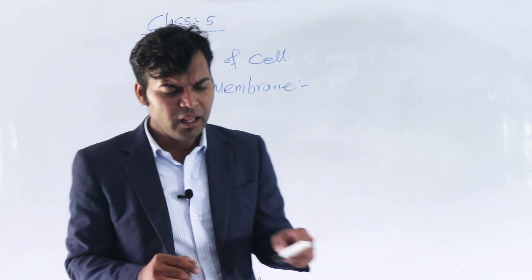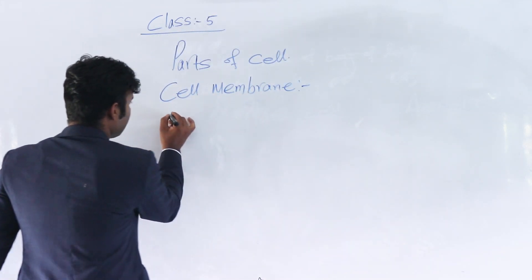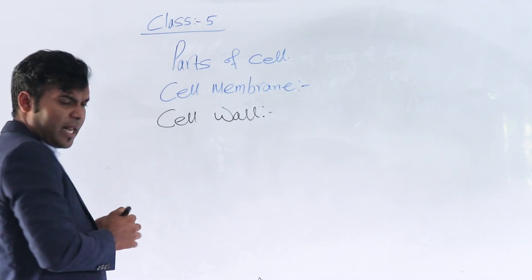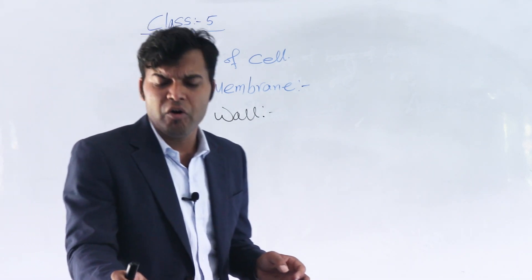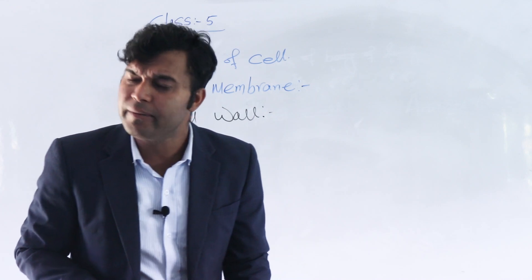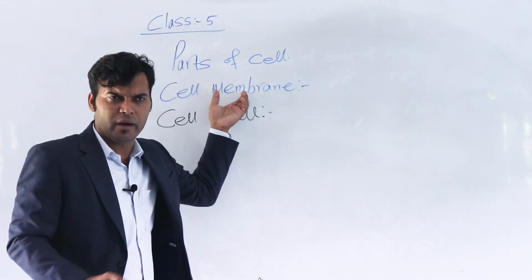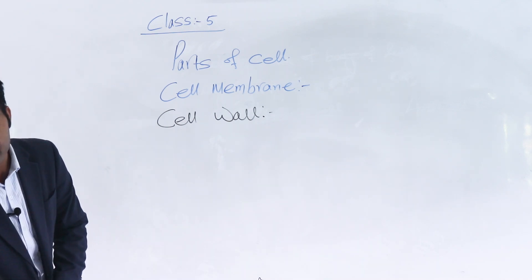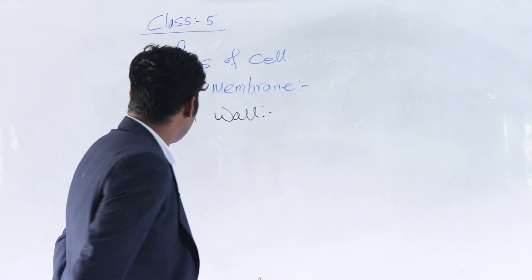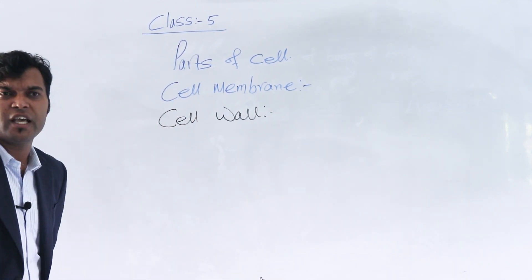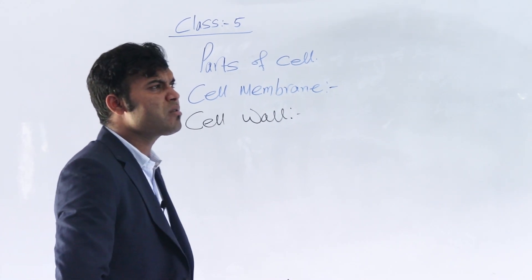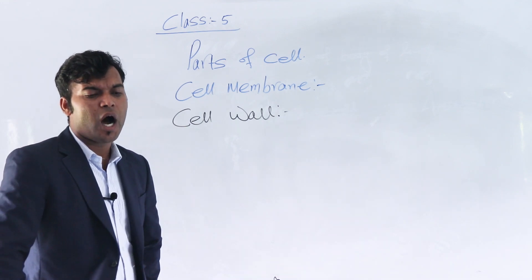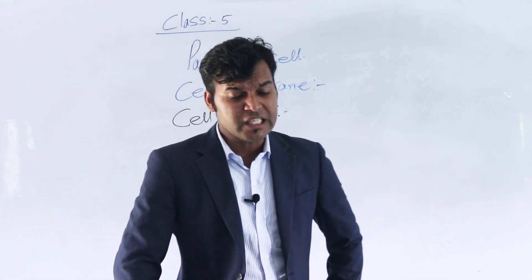Number two is cell wall. The cell membrane is the outer covering layer of an animal cell. Cell wall is defined as the outer covering part of a plant cell.